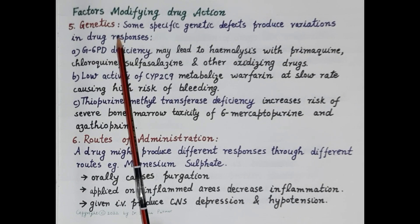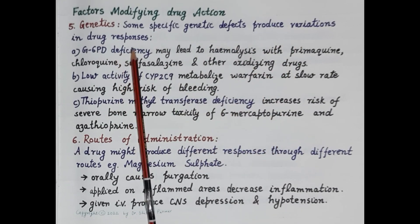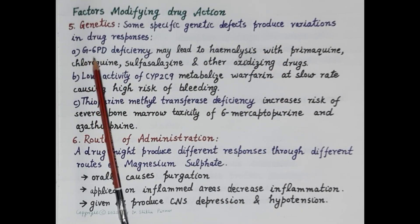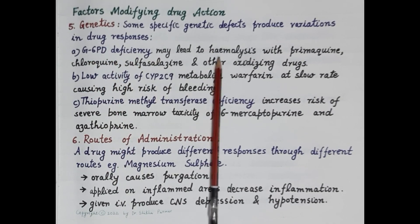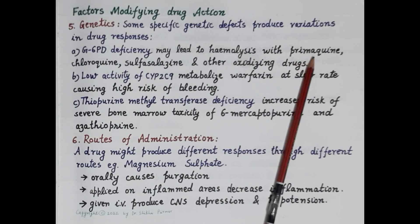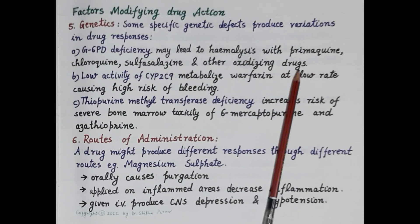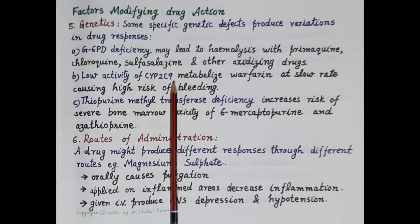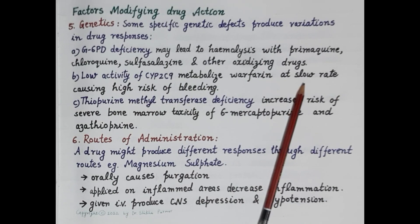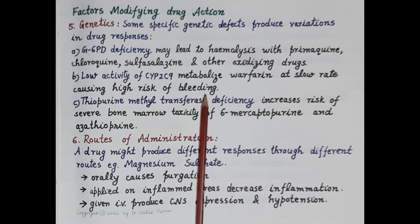The next factor is genetics. Specific genetic defects produce variation in drug responses. Glucose-6-phosphate dehydrogenase (G6PD) is a cytosolic enzyme; deficiency of this enzyme may lead to hemolysis with drugs like primaquine, chloroquine, sulfasalazine, and other oxidizing drugs. Another example: low activity of cytochrome P450 2C9 enzyme metabolizes warfarin at a very slow rate, increasing the risk of bleeding.